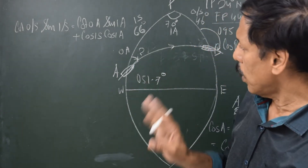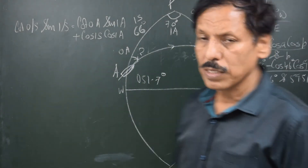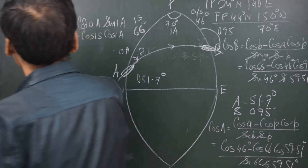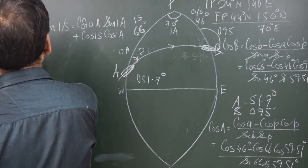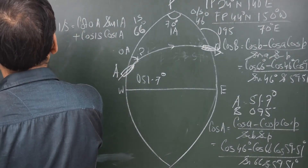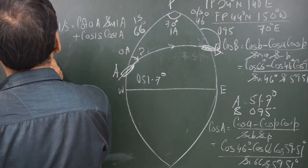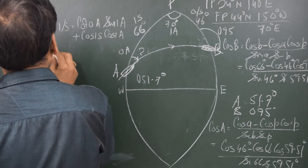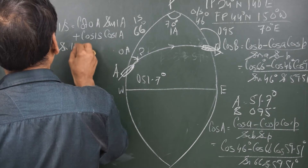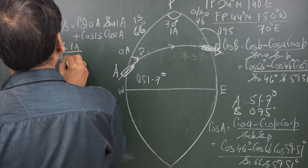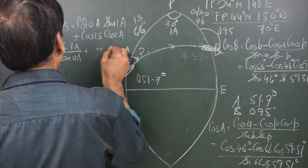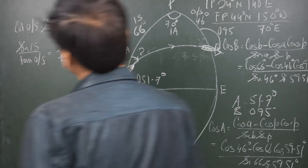Rearranging the formula: sin(inner side) / tan(outer side) = sin(inner angle) / tan(outer angle) + cos(inner side) × cos(inner angle).